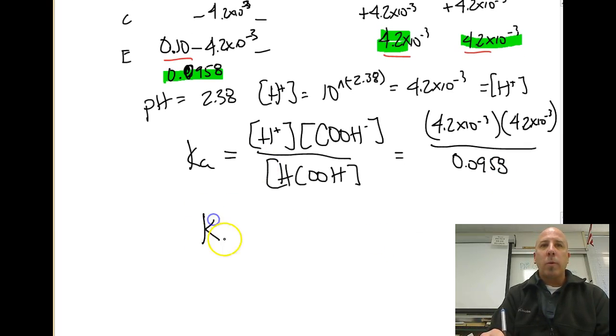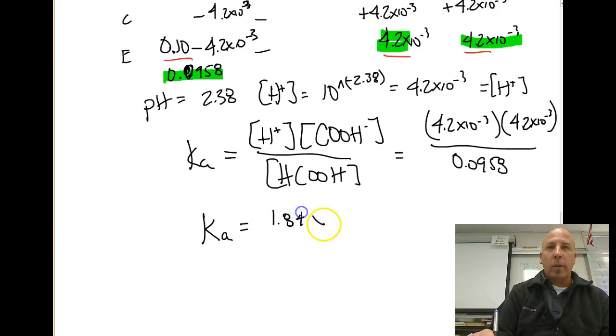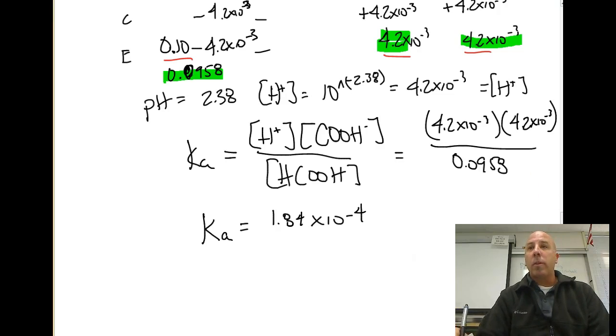And so, once we run that through our calculator, that's going to give me 1.84 times 10 to the negative fourth as a Ka value. And so, we can double check that to make sure that does match Appendix D, the Ka value for formic acid. And it does match Appendix D. So, 10 to the negative fourth is a pretty small value.